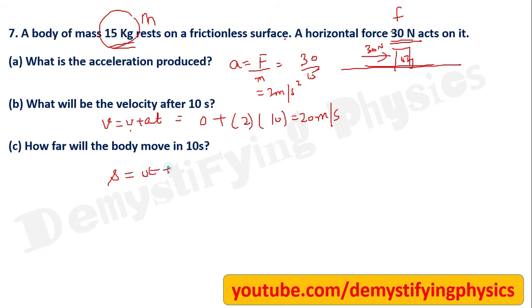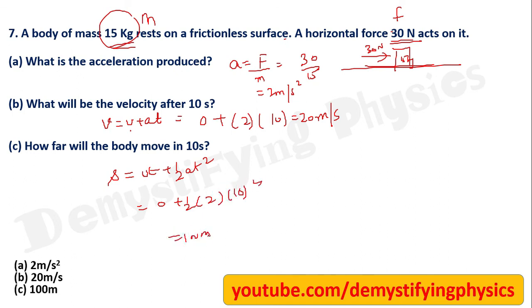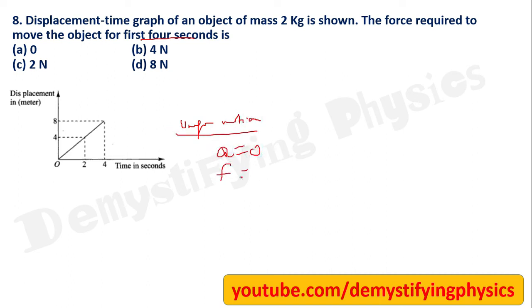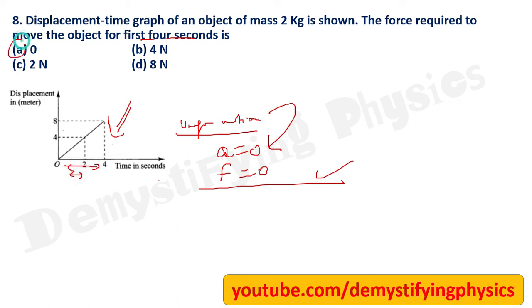To find how far the body moves in 10 seconds, use s = ut + ½at². Since u = 0, s = ½ × 2 × 100 = 100 meters. Next, a displacement-time graph is given. For the first 4 seconds it shows uniform motion, meaning speed is constant, acceleration is zero, and therefore force is zero for that entire interval.